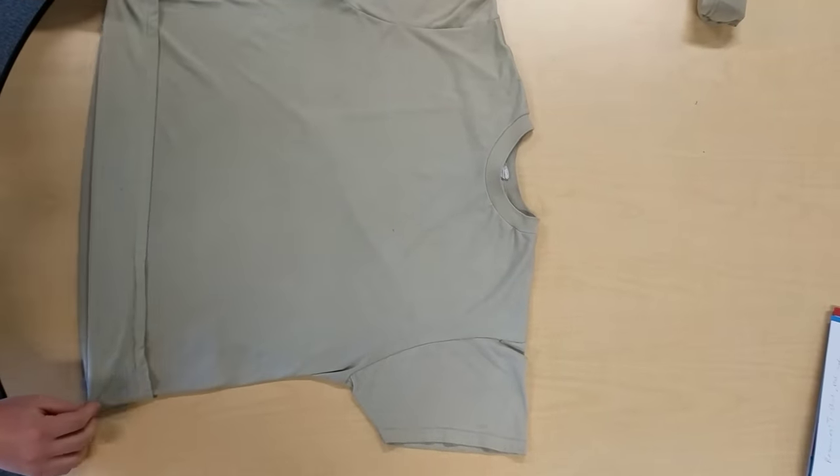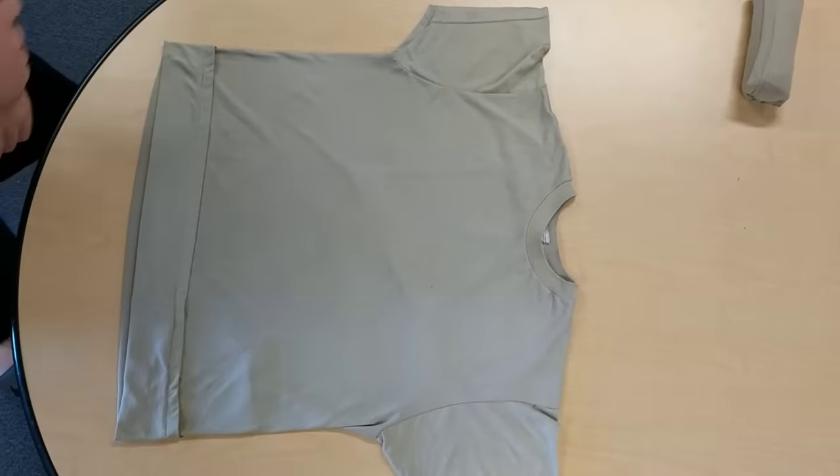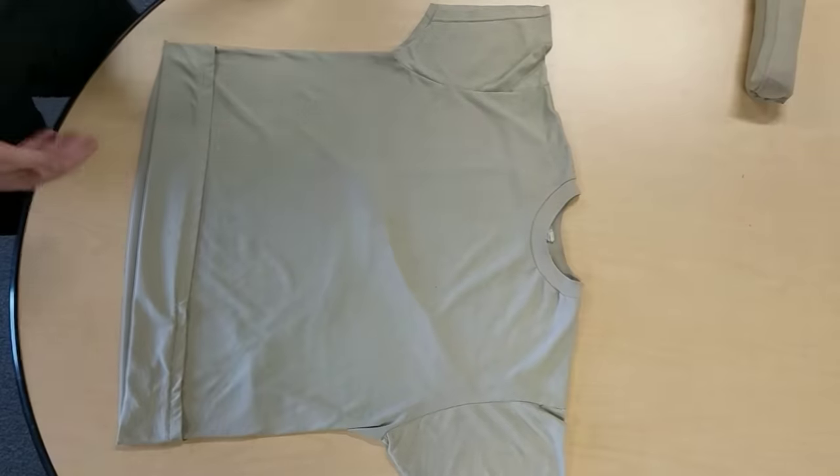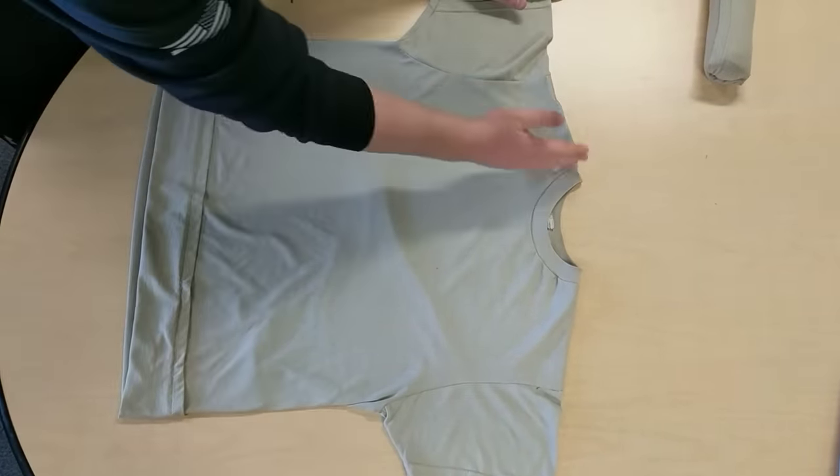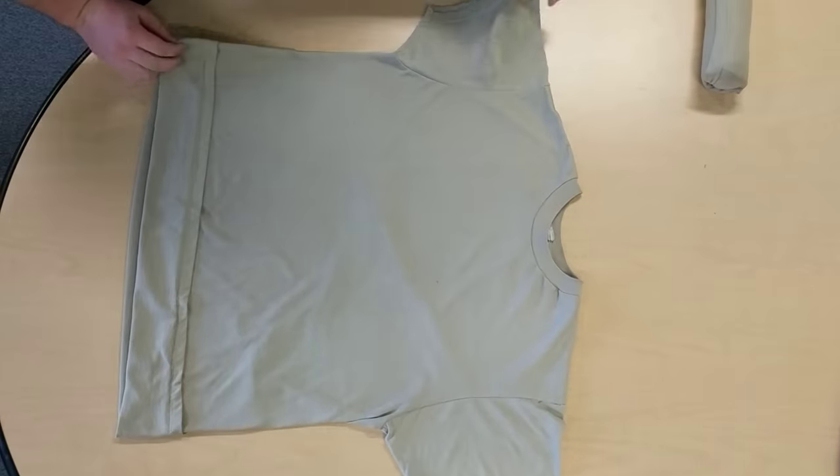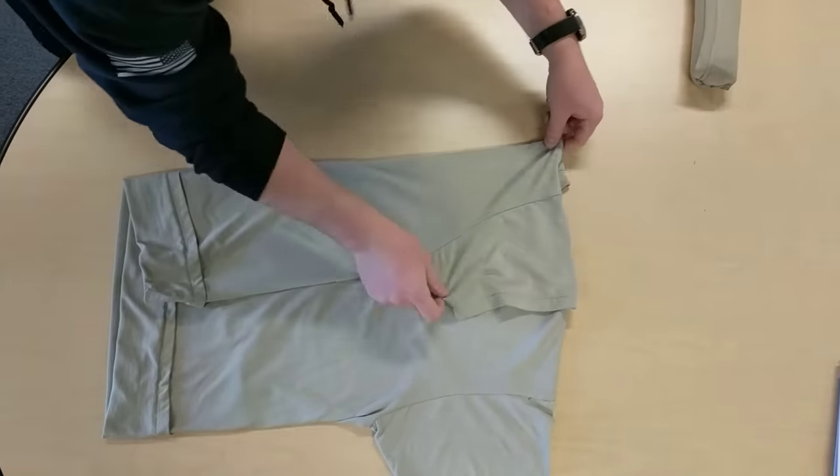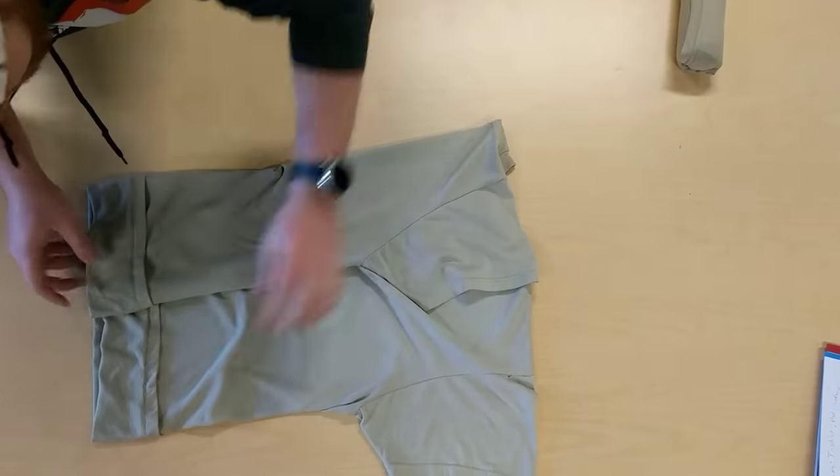Once again, I just like to double check and make sure everything's good. Next thing you're going to do is the vertical folds of the sleeves and the side of the shirt. I would say it's about one third of the way, almost to the collar. So we're going to fold it over.